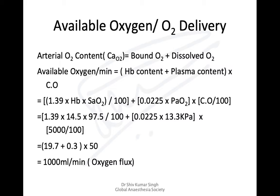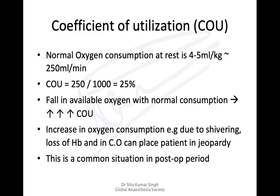The oxygen available at tissue level depends on arterial oxygen content — the amount of oxygen bound to hemoglobin plus a small amount dissolved. Multiplying by cardiac output gives the oxygen flux. Assuming cardiac output of 5 liters per minute and hemoglobin of 14.5 g/dl fully saturated, oxygen flux comes to around 1 liter per minute. We only consume around 4 to 5 ml of oxygen per kg per minute, approximately 250 mls per minute total.